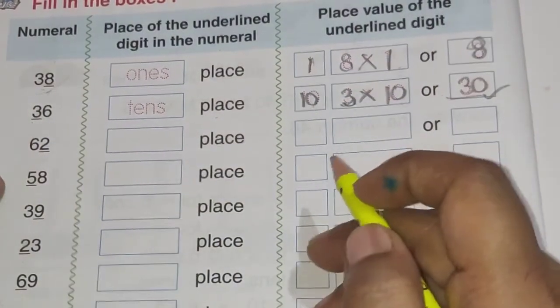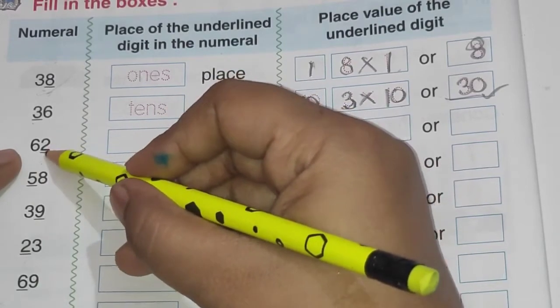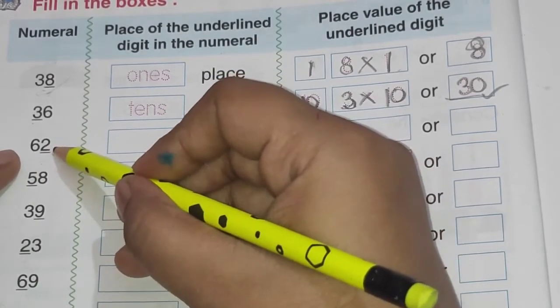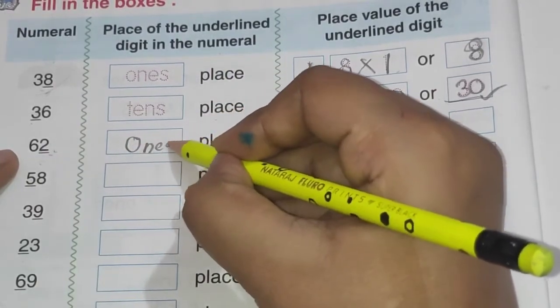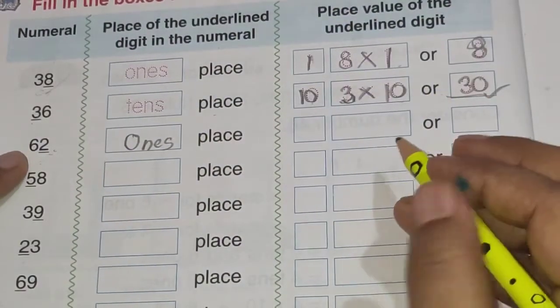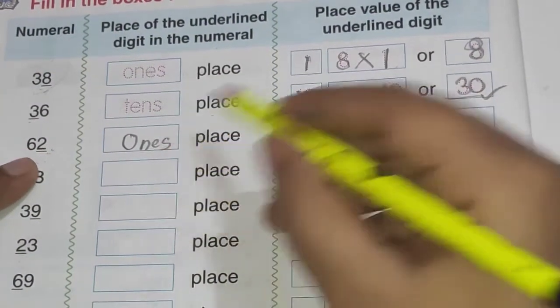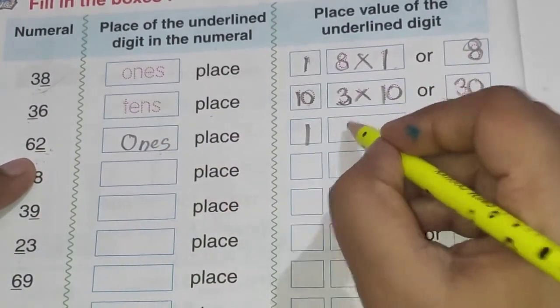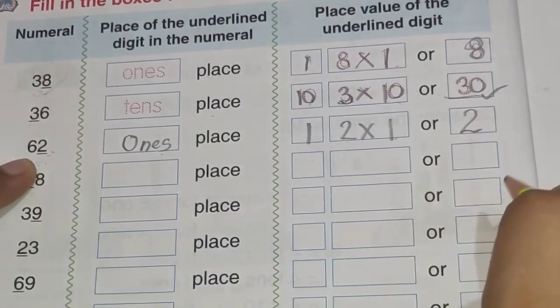Now next number is 62. Aur 62 mein underlined. Kaunsa number hai? That is 2. 2 kis place pe hai? Ones place pe hai. So we will write O, N, E, S. Ones. Now which place? Tens. Aur ones. So it is ones place. So we will write 1. And now 2 into 1. So 2 ones are 2.